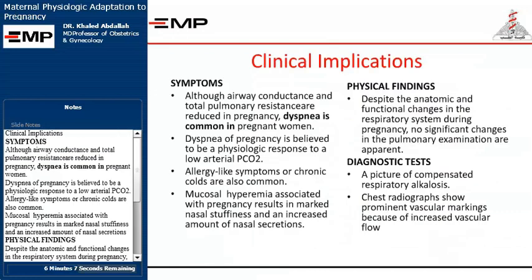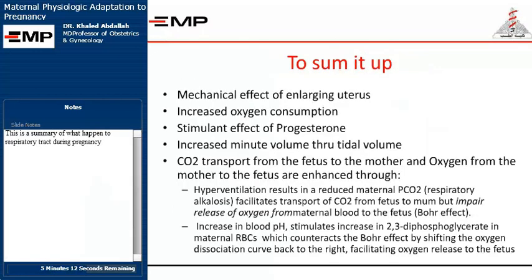Clinical implications: although airway conductance and total pulmonary resistance are reduced in pregnancy, dyspnea is common in pregnant women. Dyspnea of pregnancy is believed to be a physiologic response to a low arterial PCO2. Allergy-like symptoms or chronic colds are also common; mucosal hyperemia results in marked nasal stuffiness and increased nasal secretions. Despite these changes, no significant changes in pulmonary examination are apparent. Diagnostic tests reveal a picture of compensated respiratory alkalosis, and chest radiographs show prominent vascular markings because of increased vascular flow.